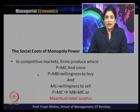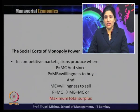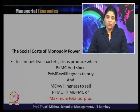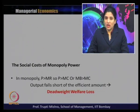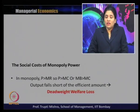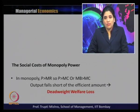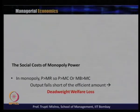Since price is greater than MC, this leads to a deadweight loss created by the monopoly. In a competitive market, the firm produces where P = MC, and since P equals marginal benefit (MB) and MC is the willingness to sell, the condition P = MC = MB means consumers get the maximum total surplus. In monopoly, P > MR or P > MC, meaning marginal benefit is greater than marginal cost, so output falls short of the efficient amount, leading to a deadweight welfare loss.